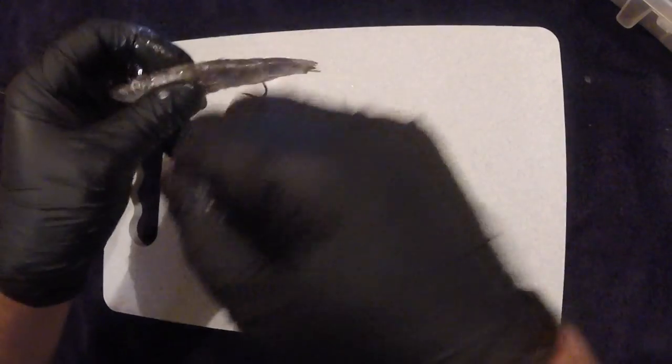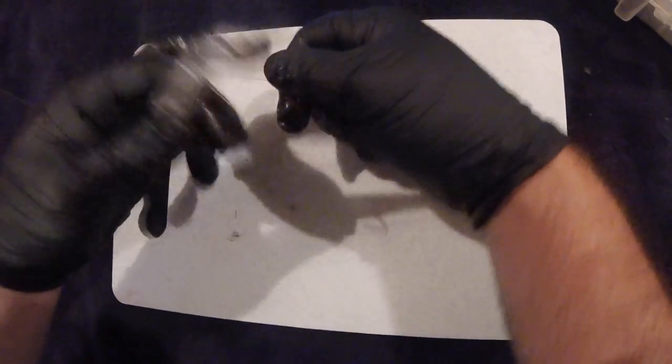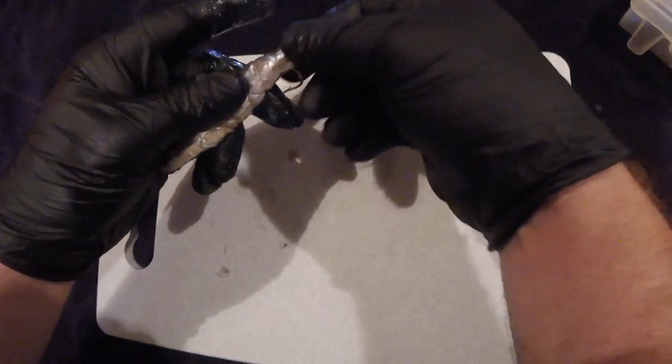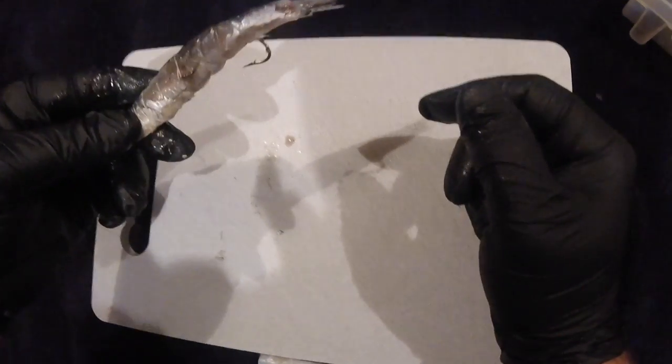And the purpose of the wire is to keep the anchovy on the hook and on the line for when you cast it, and go ahead and break it off. And there you go.